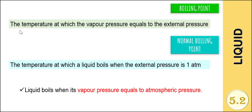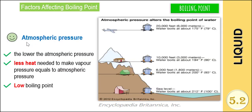Boiling point is the temperature at which the vapor pressure equals the external pressure, while the normal boiling point is the temperature at which a liquid boils when the external pressure is exactly 1 atmosphere. One of the factors that affects the boiling point is the atmospheric pressure.